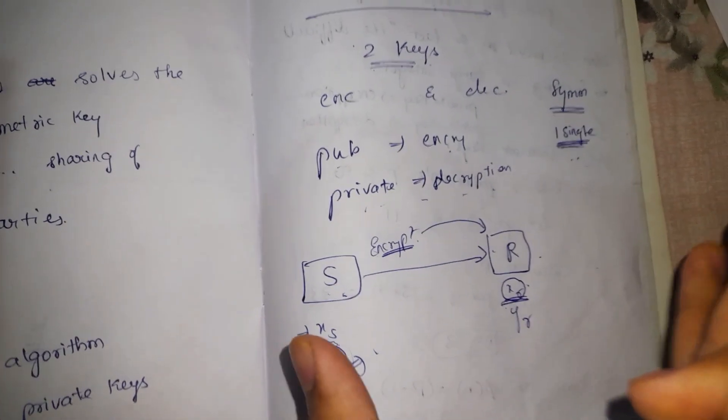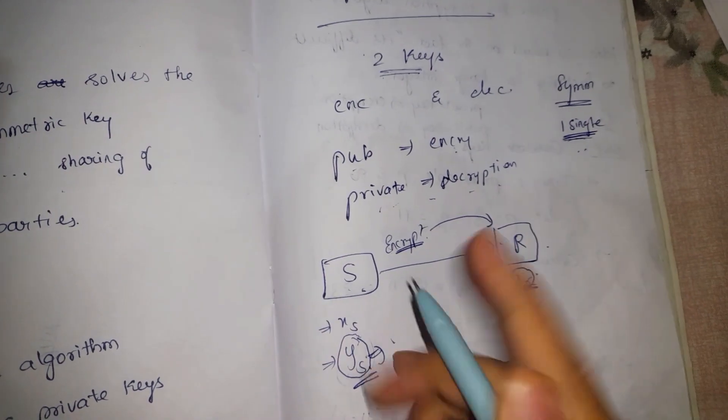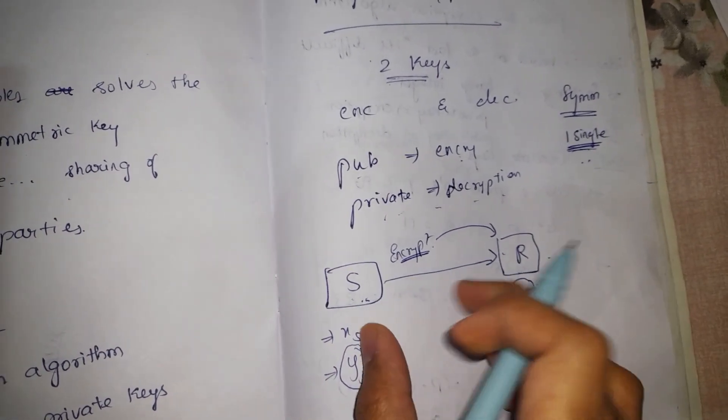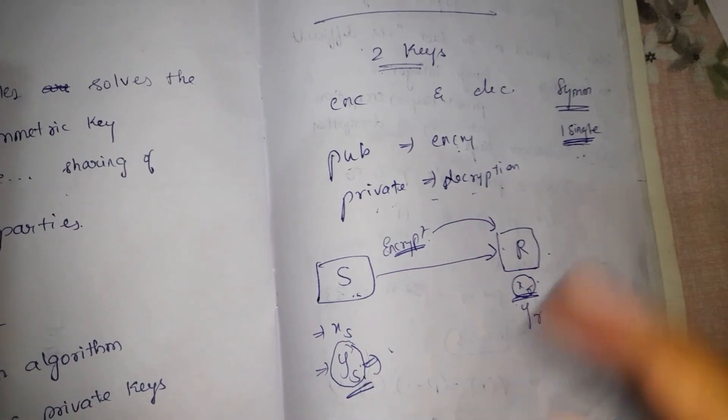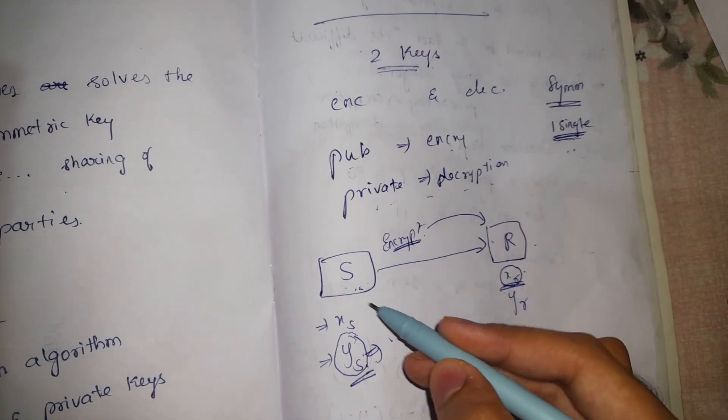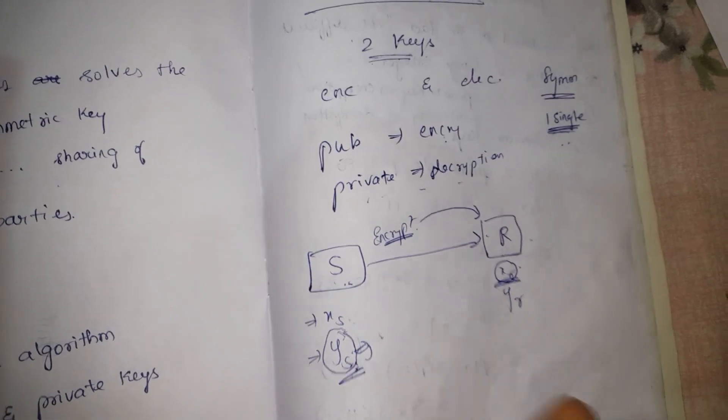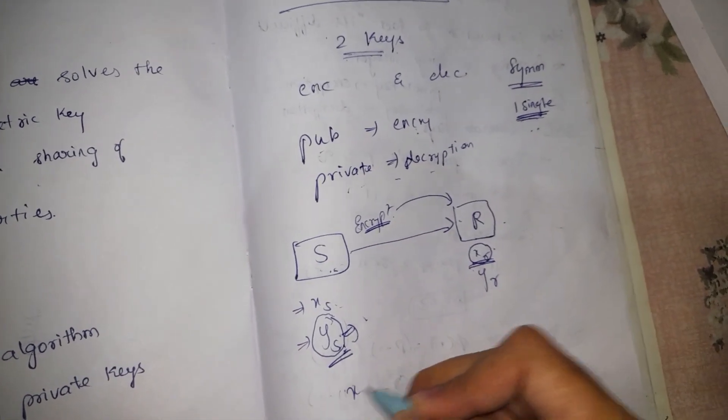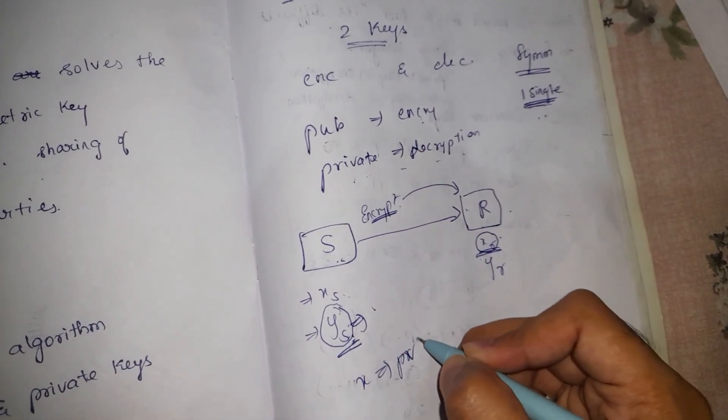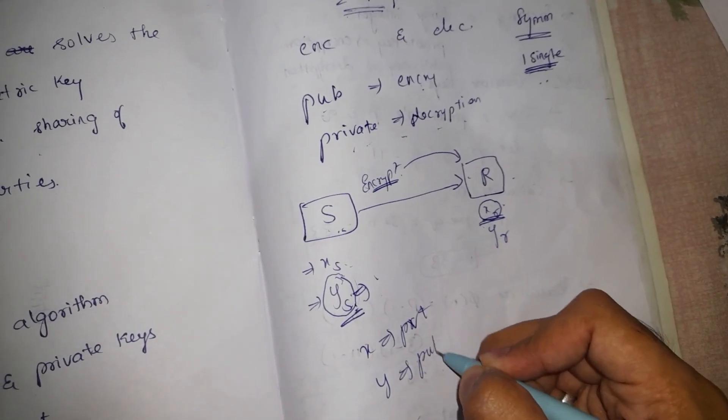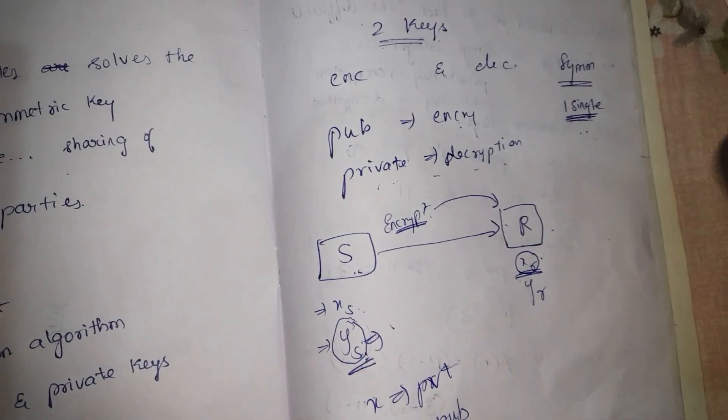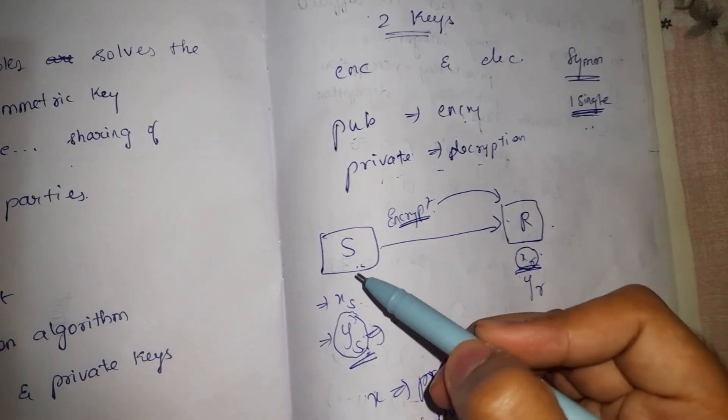Now consider this scenario: we have a sender and a receiver which are exchanging typical communication. What they will do is they will generate these two keys - the public key and private key. X is private key and Y is representing public key.